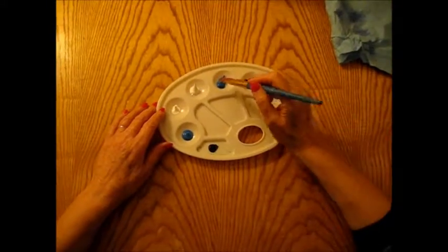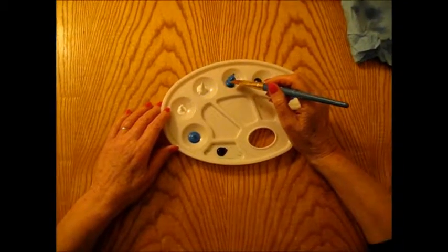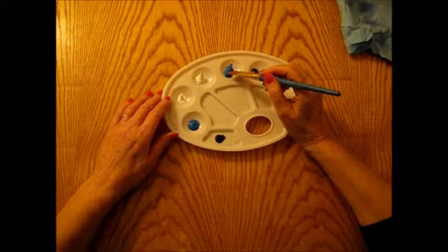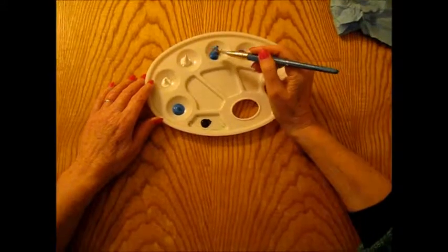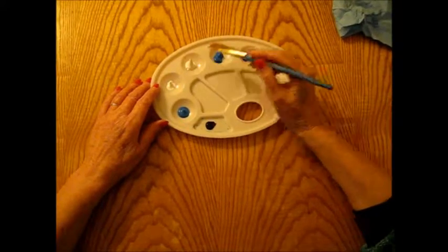Well, first of all, you have your original color here, which is your hue. It's called hue, and then you have your white and your black.